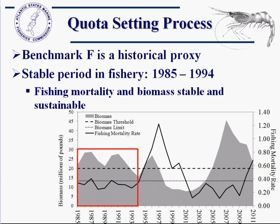The benchmark target F is a historical proxy. We looked at a stable period in the fishery from 1985 to 1994 — shown as a red box — where the gray represents biomass and the black line is the fishing mortality rate. During this period, the fishery was pretty stable in terms of landings, but more importantly in terms of F and biomass. It fluctuates a little, but not like later in the time series. The average F for this period is our target.